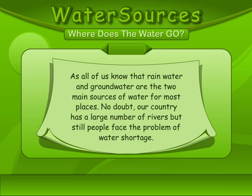Water Shortage. As we all know, rain water and ground water are the two main sources of water for most places. No doubt our country has a large number of rivers, but still people face the problem of water shortage.